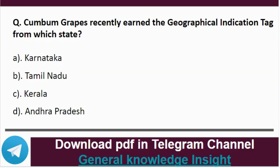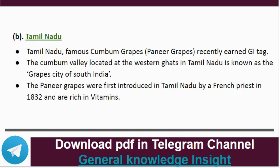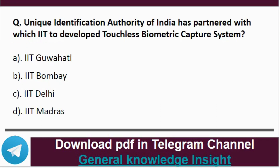Question 6: Gumbum crabs recently earned the Geographical Indication tag from which state? The correct answer is option B, that is Tamil Nadu. Tamil Nadu's famous Gumbum crabs and Bannier crabs recently earned the Geographical Indication tag. The Gumbum valley, located in the western ghats of Tamil Nadu, is known as the crab city of South India. The Bannier crabs were first introduced in Tamil Nadu by a French priest in 1832 and are rich in vitamins.